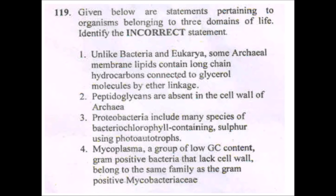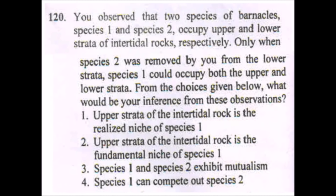Next question asks for the incorrect statement. Mycoplasma is a group of low GC-content gram-positive bacteria that lack a cell wall — this is incorrect because Mycoplasma does not have a thick cell wall; it is known for lacking a cell wall entirely. So option 4 is the incorrect statement.